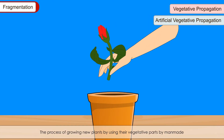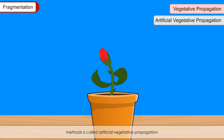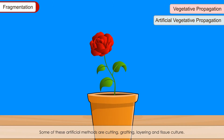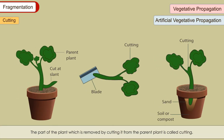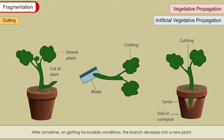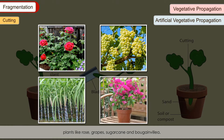Artificial Vegetative Propagation: The process of growing new plants by using their vegetative parts through a man-made method is called artificial vegetative propagation. Some of these artificial methods are cutting, grafting, layering and tissue culture. Cutting: A part of the plant removed by cutting it from the parent plant is called a cutting. A healthy stem with leaf buds is cut and planted in moist soil. After getting favourable conditions, it develops into a new plant. This method is commonly used for rose, grapes, sugarcane and bougainvillea.